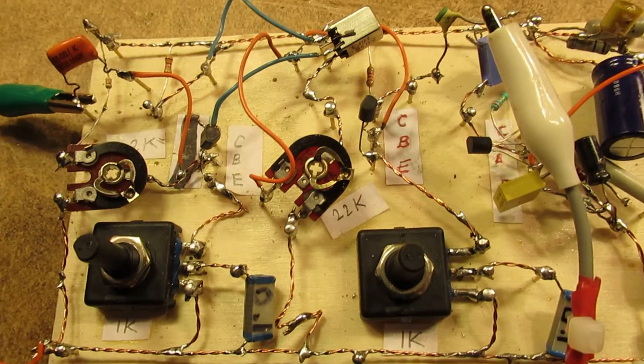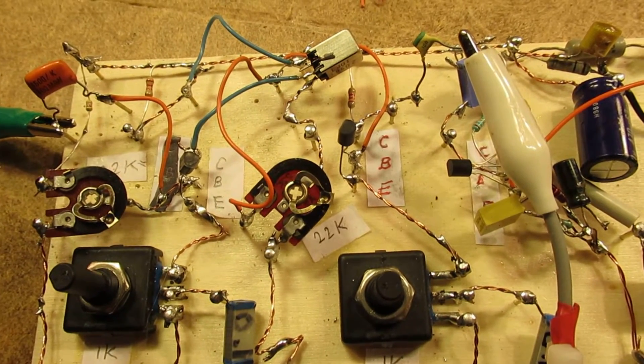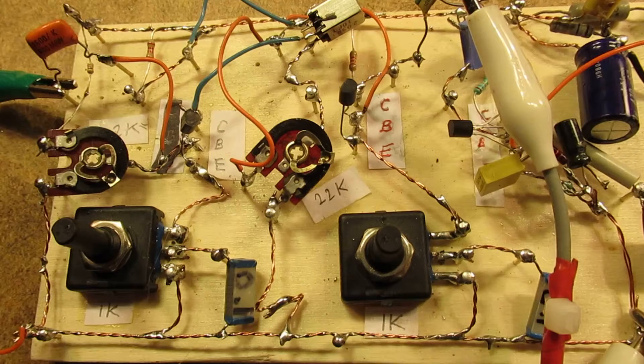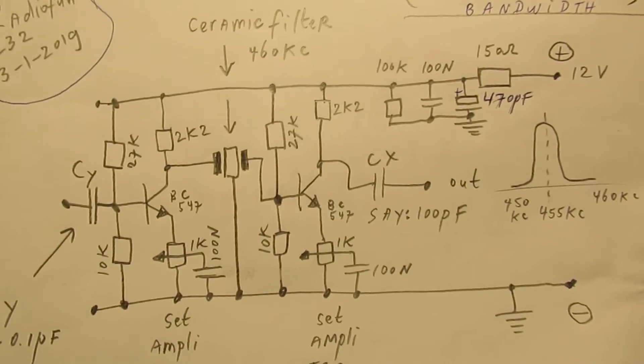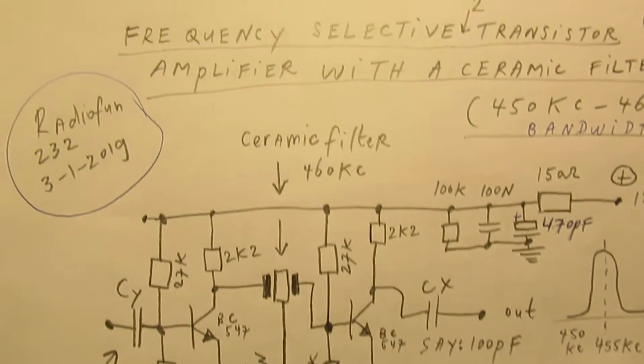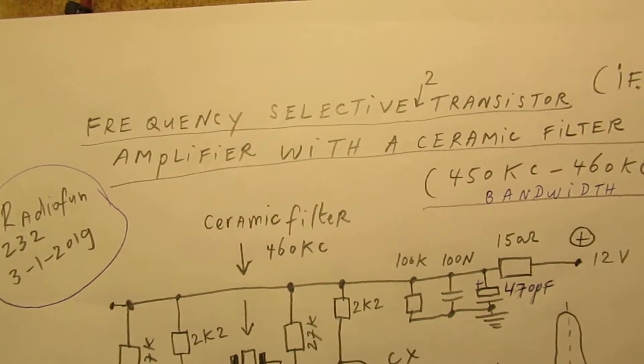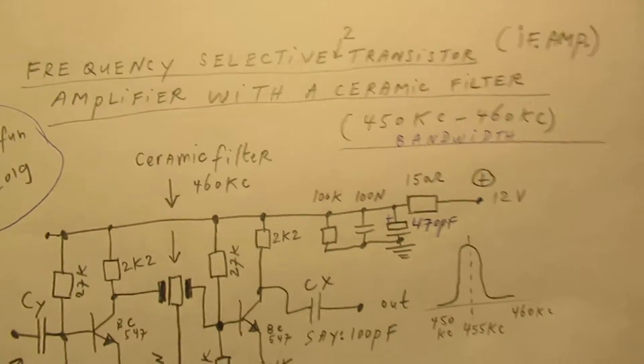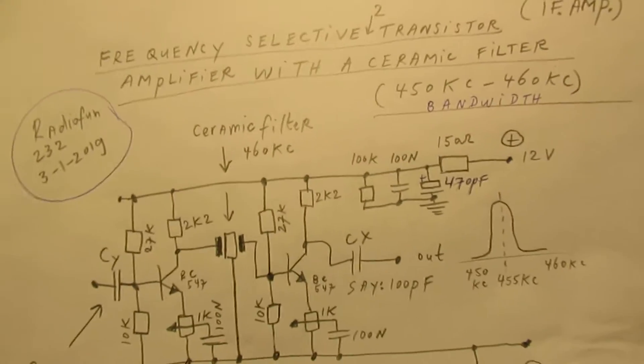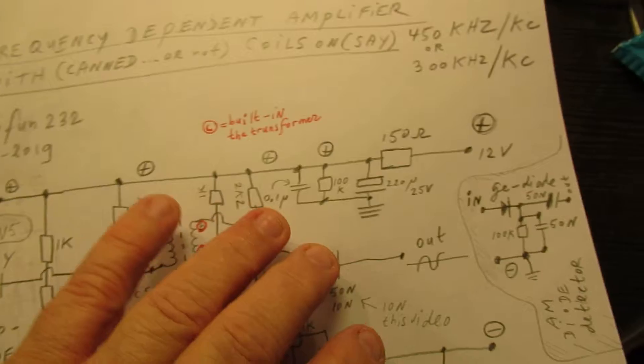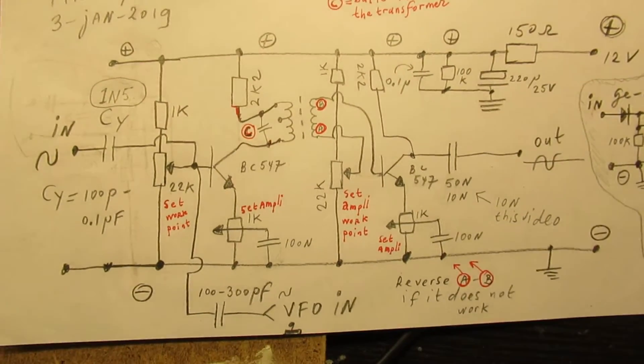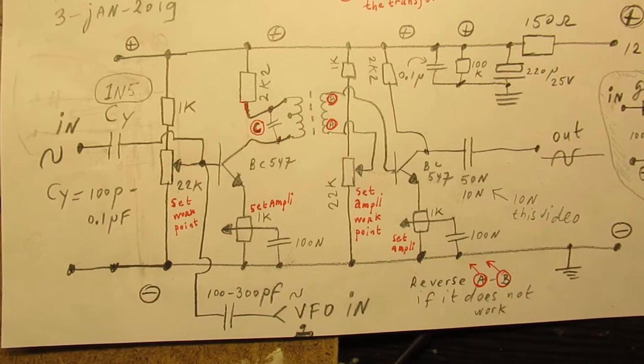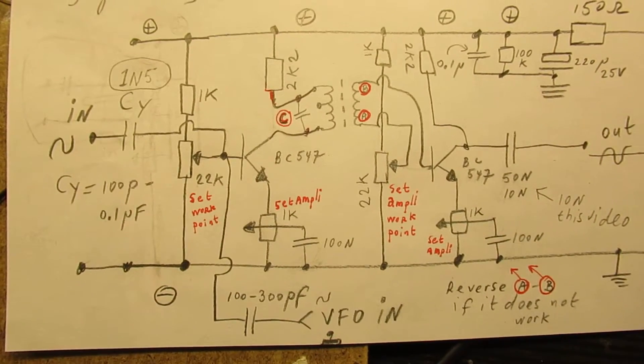I've adapted for this application the grounded emitter circuit somewhat. This was the circuit with the ceramic filter on 460 kilohertz. This is the new circuit and you can immediately recognize that it's a grounded emitter circuit.